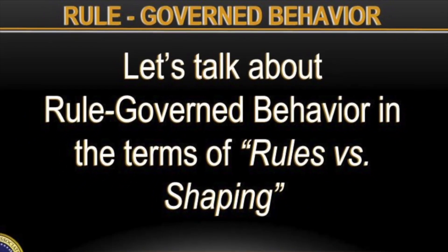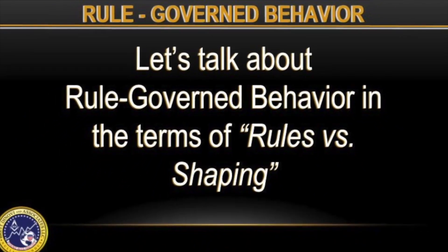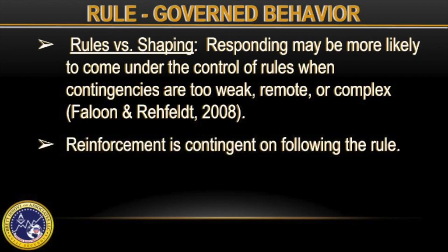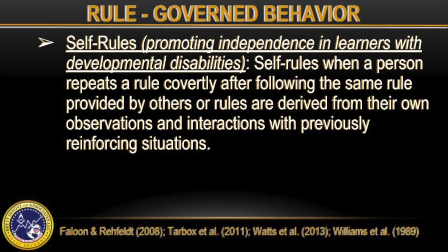Let's talk about Rule-Governed Behavior in terms of Rules vs. Shaping. In Rules vs. Shaping, responding may be more likely to come under the control of rules when contingencies are too weak, remote, or complex. Reinforcement is contingent on following the rule. Then we have self-rules, such as promoting independence in learners with developmental disabilities. Self-rules are defined as when a person repeats a rule covertly after following the same rule provided by others or derived from their own observations and interactions with previously reinforcing situations.